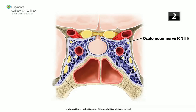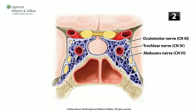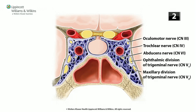Next: what structures run through the cavernous sinus? You have the oculomotor nerve, which is cranial nerve 3; the trochlear nerve, which is cranial nerve 4; the abducens nerve, which is cranial nerve 6; the ophthalmic nerve, which is the first division of the trigeminal nerve; the maxillary nerve, which is the second division of the trigeminal nerve; and also the internal carotid artery.